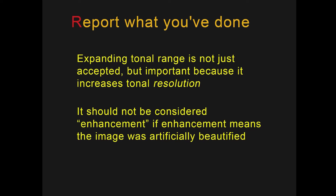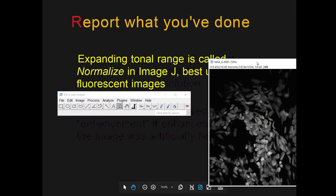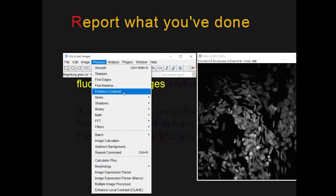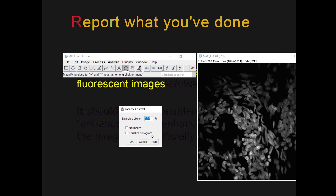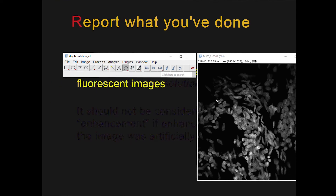Expanding tonal range should not be considered enhancement if enhancement means the image was artificially beautified. Expanding tonal range is called Normalize in ImageJ, and it's best used for fluorescent images. In ImageJ, open your image and go under Process to a mislabeled function called Enhance Contrast — you're given two choices. One does enhance the contrast: that's the Equalize choice, but we're going to choose Normalize. Because we don't want many pixels to be oversaturated, we'll put in 0.01 and click OK. That will allow the image to become brighter if it's too dim.